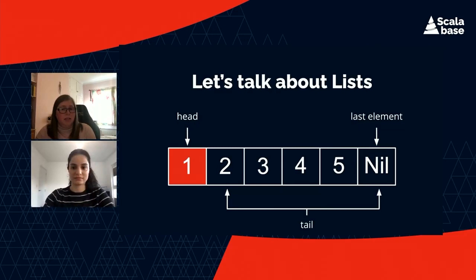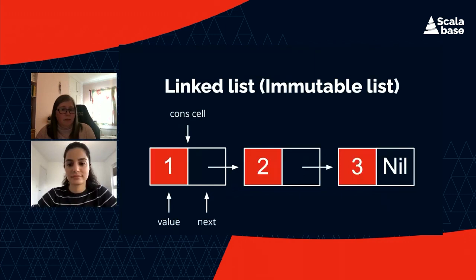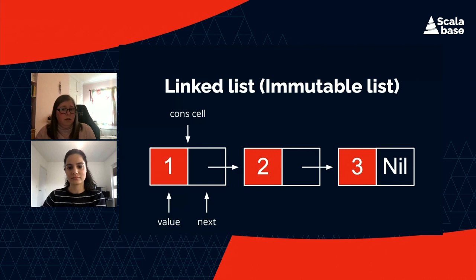In order to understand recursion, we first need to understand how the list data structure works. A list is made up of a head and a tail. The head is the first element in the list, and the tail is composed of all of the other elements that make up the rest of the list. The last element of a list is always nil. A linked list is made up of a collection of cells or nodes, each containing a value and a pointer to the next cell. Nil always appears at the end, which is how recursion knows when it has come to the end.